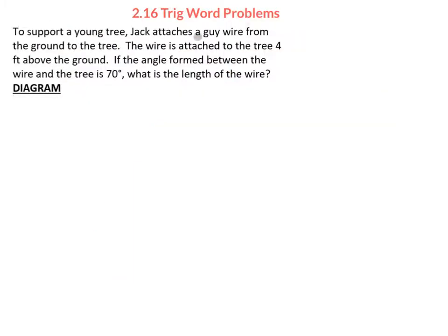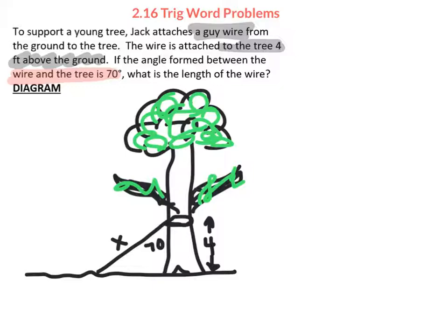Traditionally we struggle with the guy wire problem, partly because we're unsure what it is — it's some sort of a brace or wire. It's attached to the tree four feet above the ground, and the angle formed between the wire and the tree is 70 degrees. When it talks about attached to the tree four feet up, the height is four, and the 70-degree angle is between the wire and the tree. We want to find the length of the wire holding the tree in place.